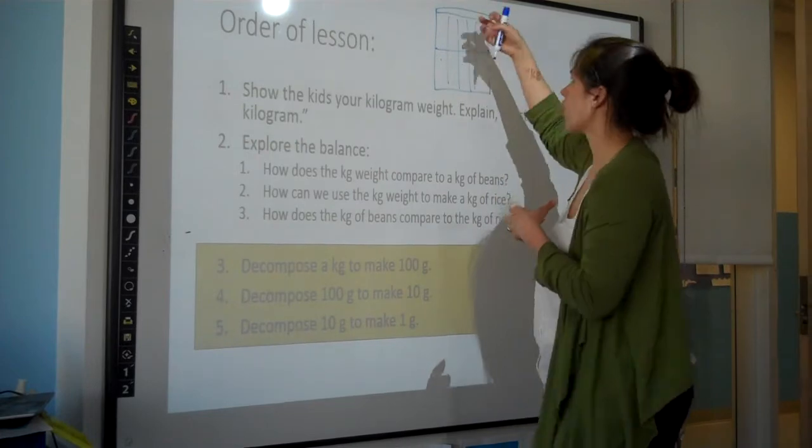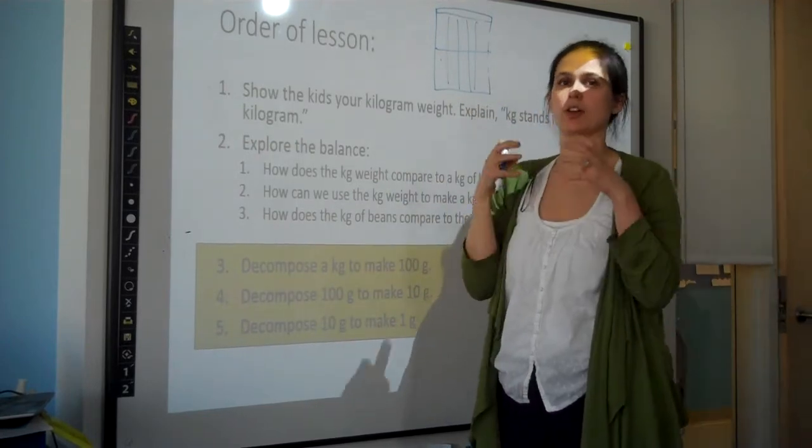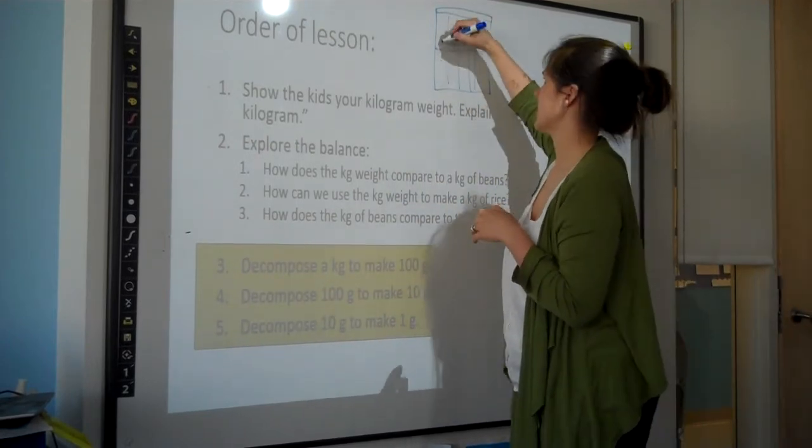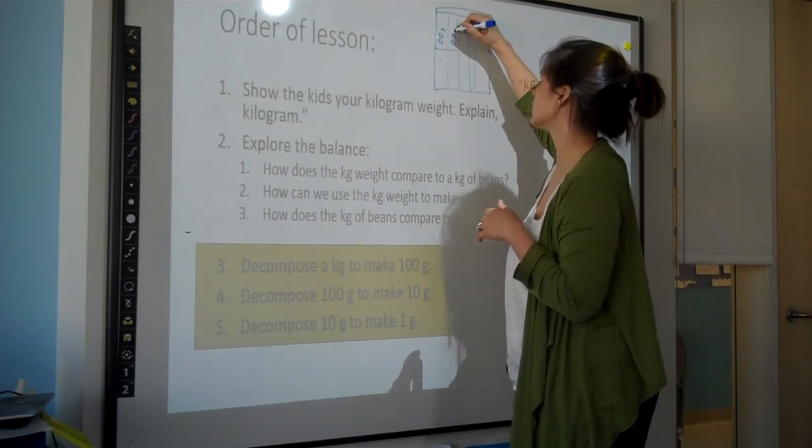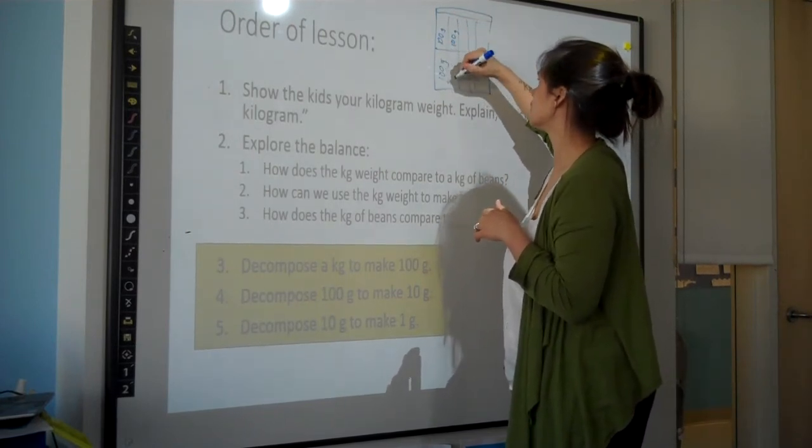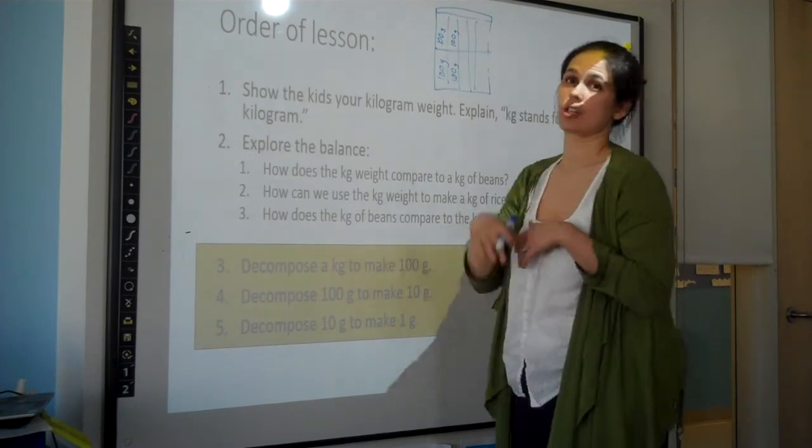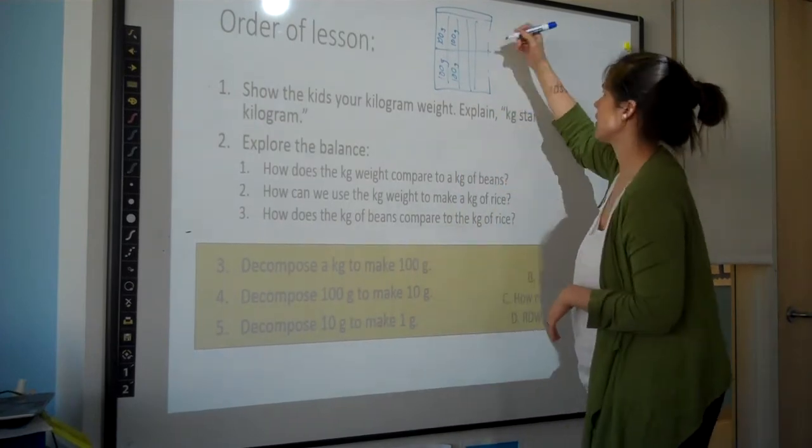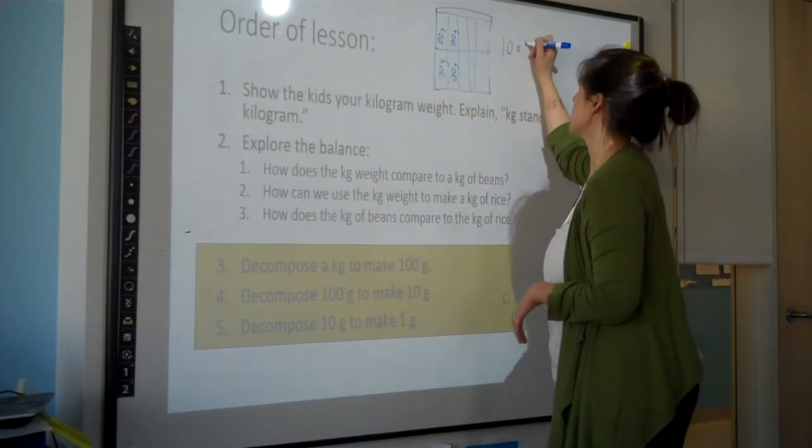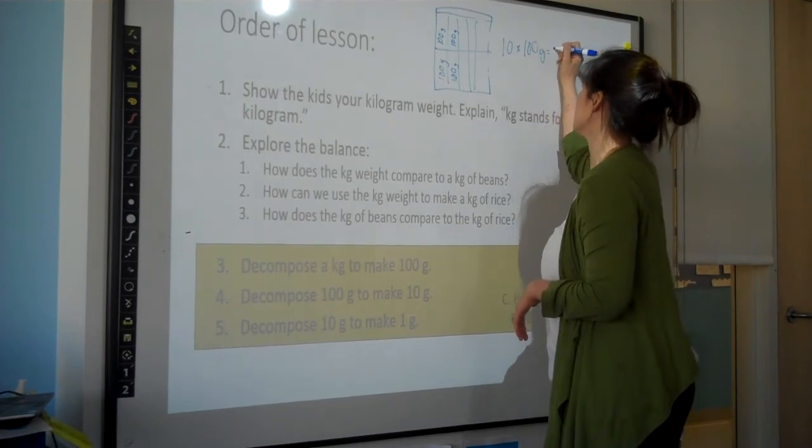Then, you pour out that amount onto the digital scale to weigh that amount. So in this case, you did it, and you got 100 grams. You're eventually going to talk about it. And then finally, right, the equation is 10 times 100 grams makes 1,000.